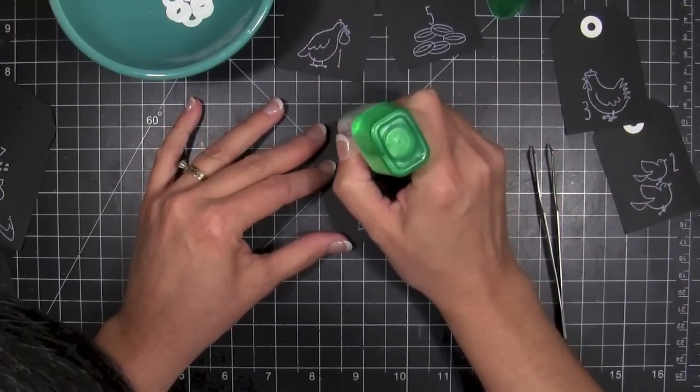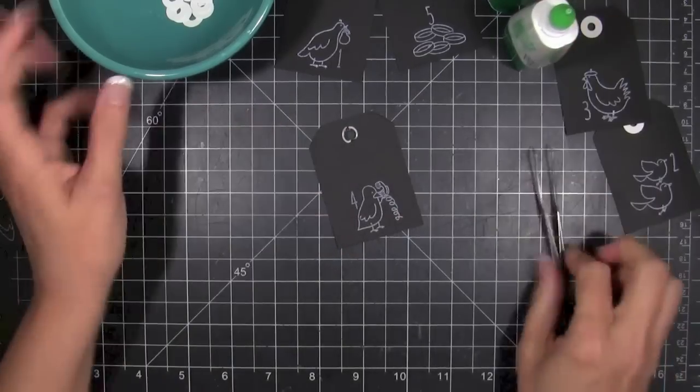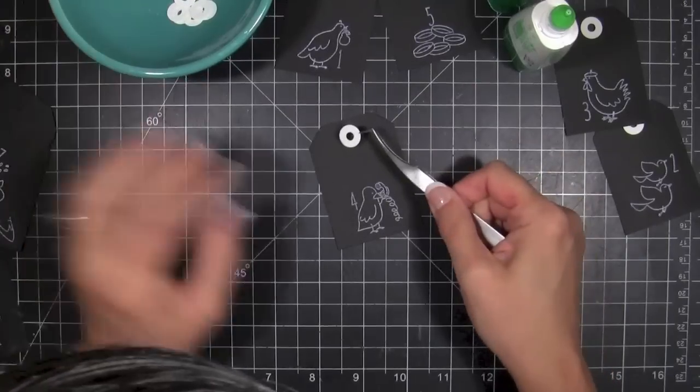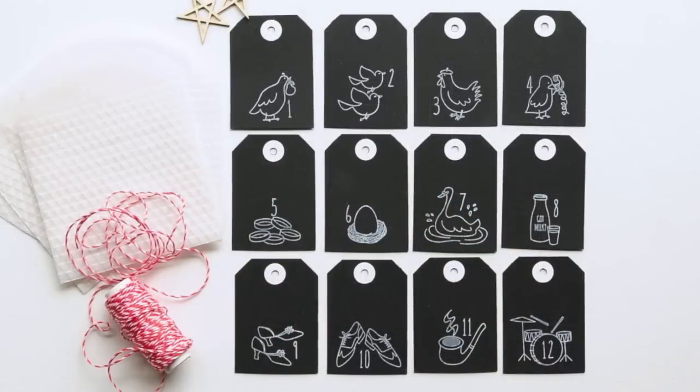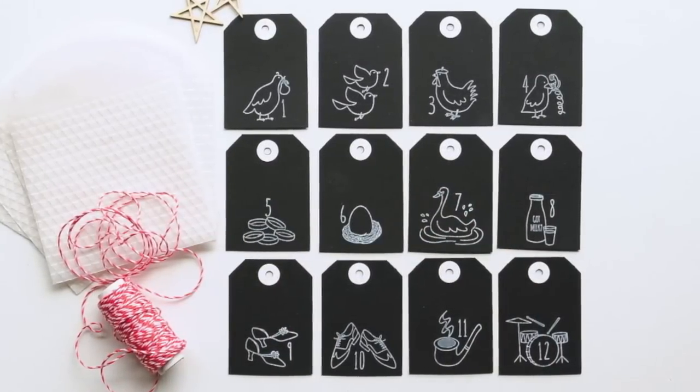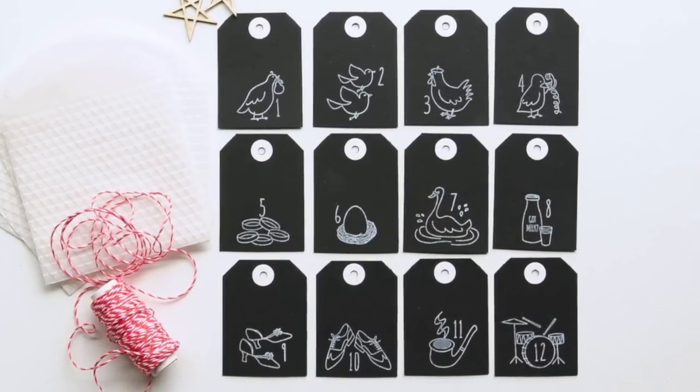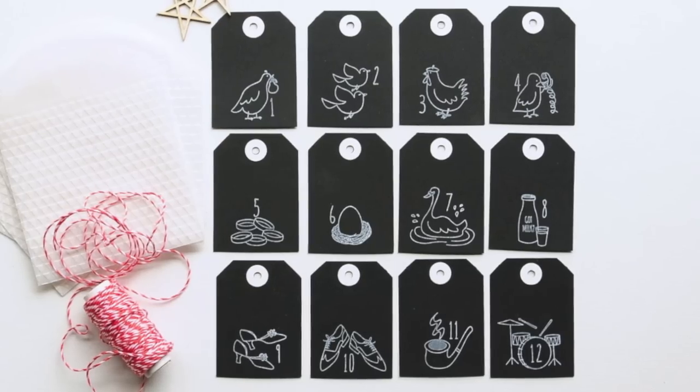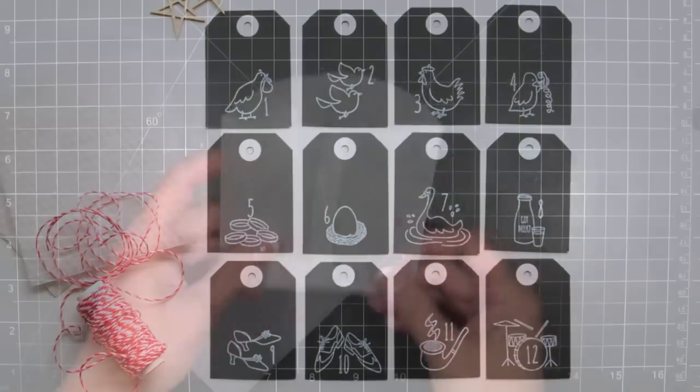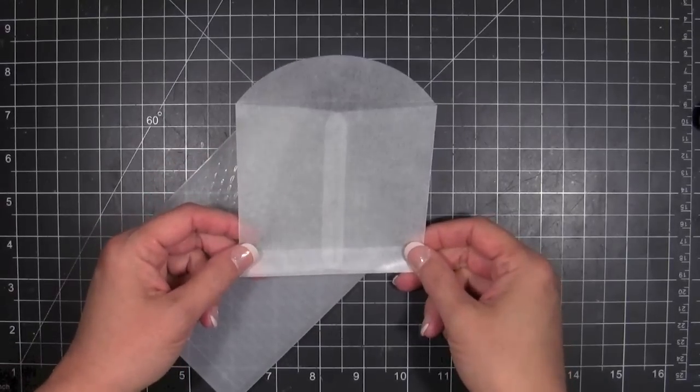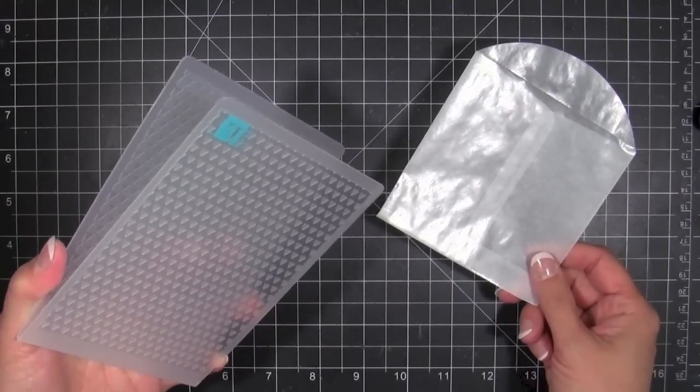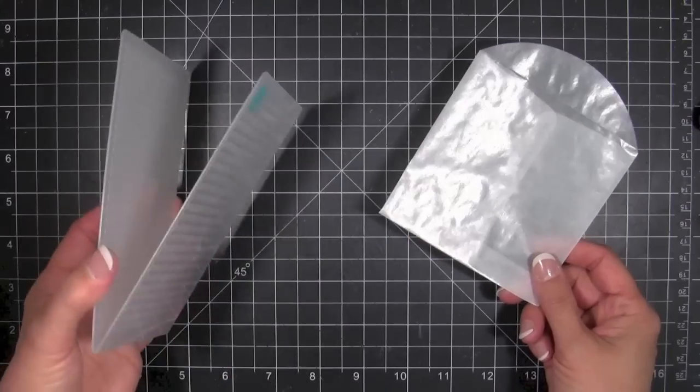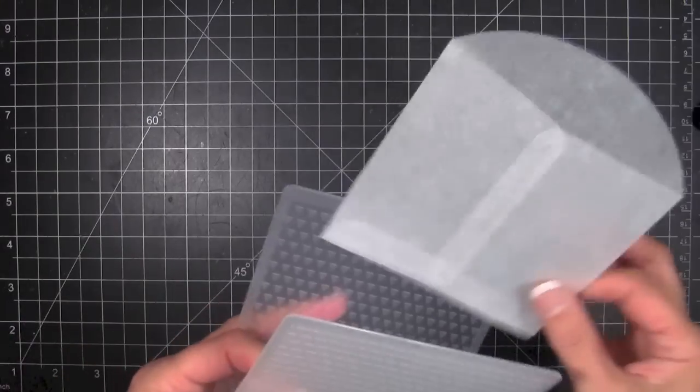All I have to do is take some of that Tombow mono multi glue and quickly glue those into place on my tags. You can just really pump these out super fast, very quick and easy. I heat set them, but you can let them air dry, especially if you're doing a lot. This is a great way to speed up your stamping for mass production.